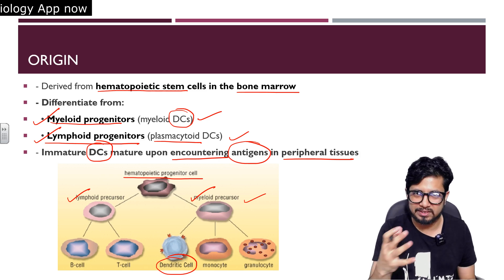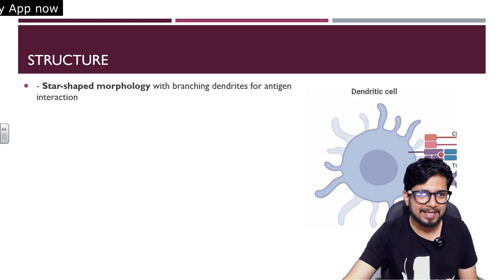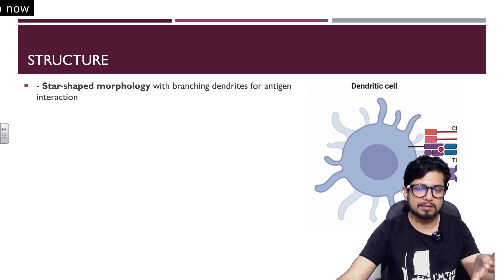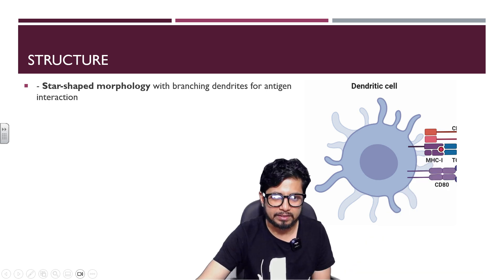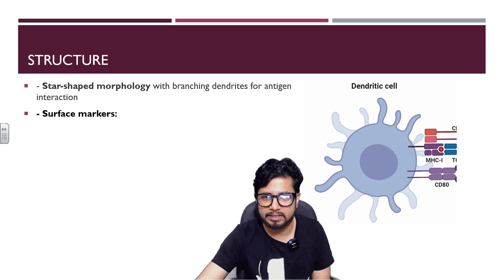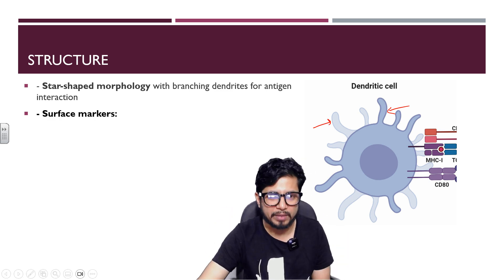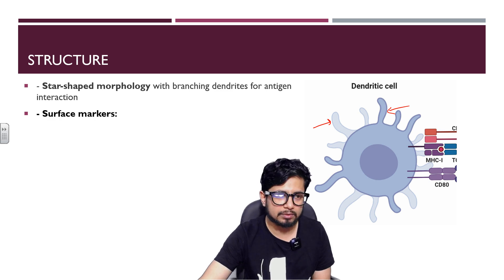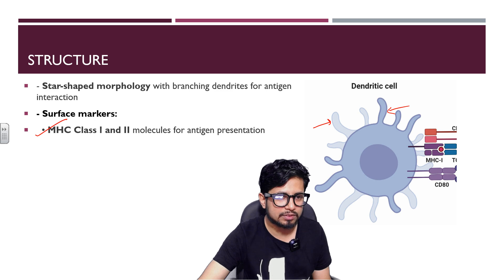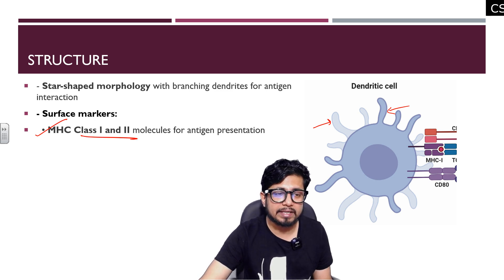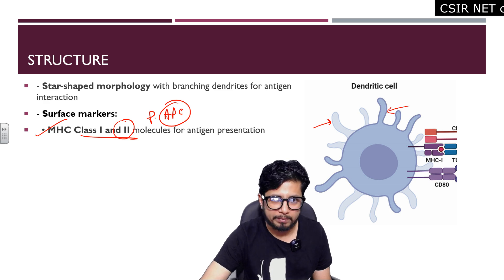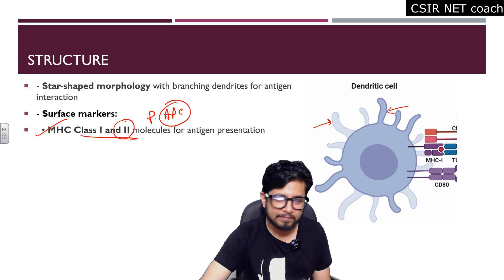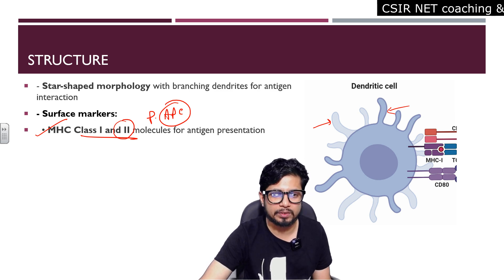Looking at the structure of the dendritic cell: it has a star-shaped morphology that distinctively sets it apart from other cells, because it has branching. You can see the central nucleus with pseudopod-like branching structures that help them interact with other cells.